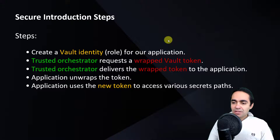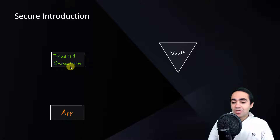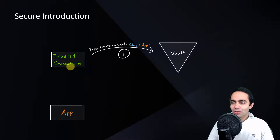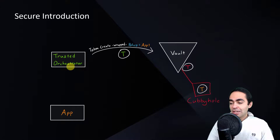Looking at the illustration: the actual unwrapped or real token is color-coded yellow, the trusted orchestrator is green, and the wrapped Vault token is red. The trusted orchestrator — in our case Jenkins, though it could be Terraform or Ansible — talks to Vault using its own green token. It has very limited permissions: the only permission is to wrap a secret ID. Vault checks the policy associated with that green token, then creates a wrapped token and stores it in something called a cubbyhole.